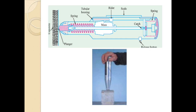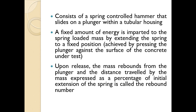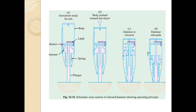The rebound hammer consists of a spring-controlled hammer that slides on a plunger within a tubular housing. A fixed amount of energy is imparted to the spring-loaded mass by extending the spring to a fixed position. Upon release, the mass rebounds from the plunger, and the distance traveled by the mass, expressed as a percentage of the initial extension of the spring, is called the rebound number. This is the schematic cross-section of the rebound hammer showing the operating principle.